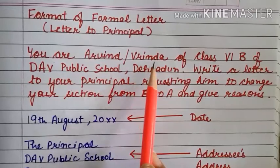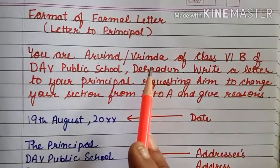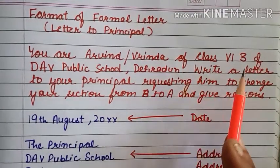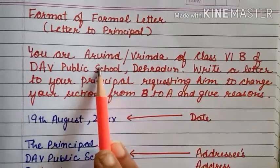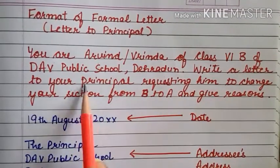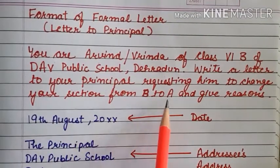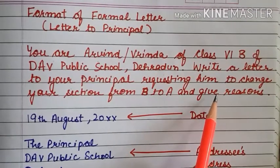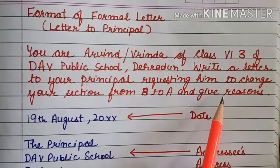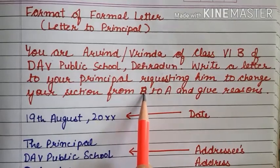You are Arvind or Vrinda — if you are a boy, you will sign as Arvind; if you are a girl, as Vrinda — of class 6th B of DAV Public School, Dehradun. Write a letter to your principal requesting a change of section from B to A and give proper reasons. So you have to write an application to your principal requesting to change your section from B to A.